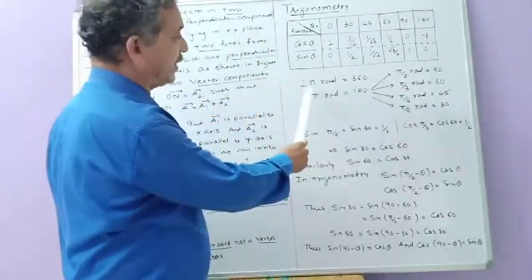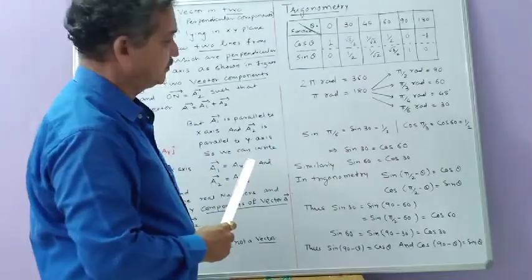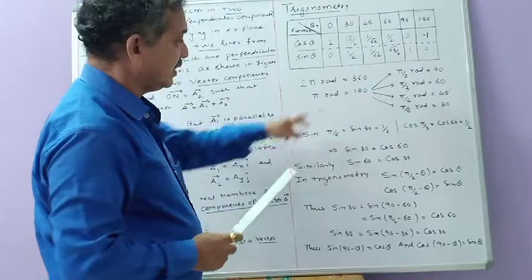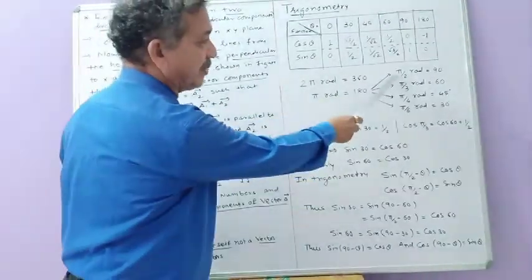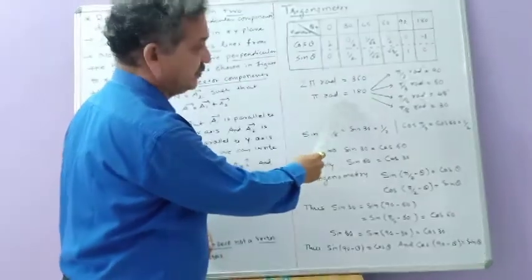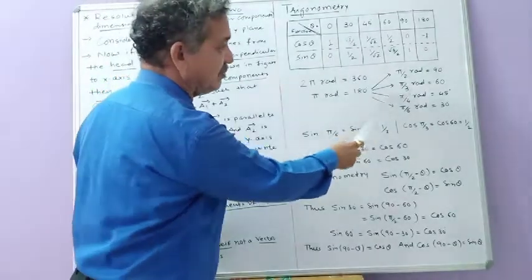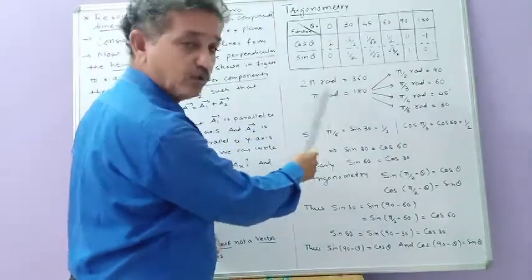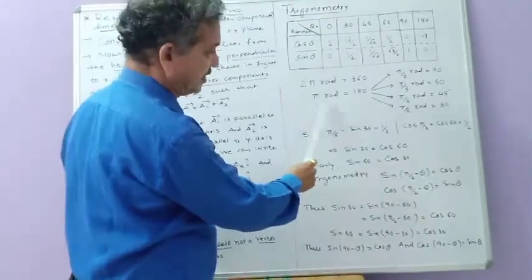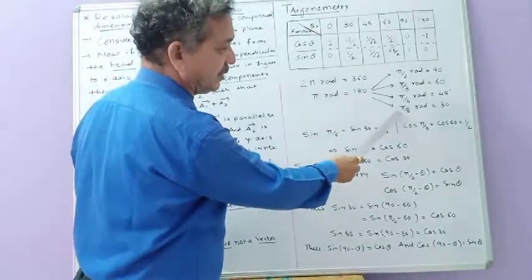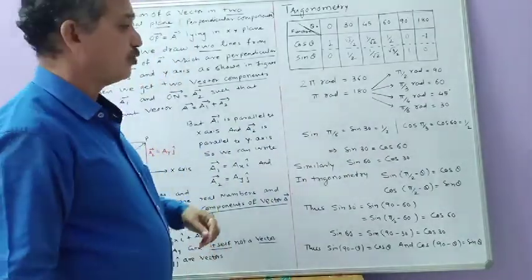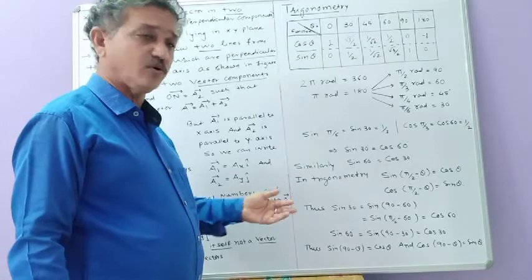Now you know 2π is equal to 360°, so π is equal to 180°. Dividing both sides by 2, π/2 radian equals 90°. Dividing by 3, π/3 equals 60°. Dividing by 4, π/4 equals 45°. Dividing by 6, π/6 equals 30°. So in physics you can use the angle either in terms of degrees or in terms of radians.